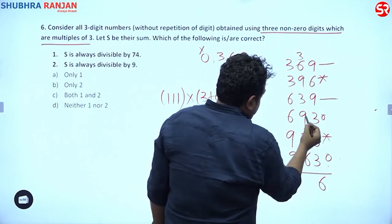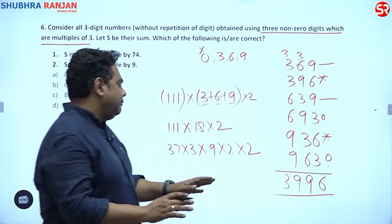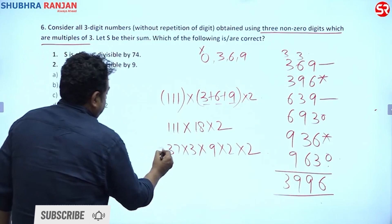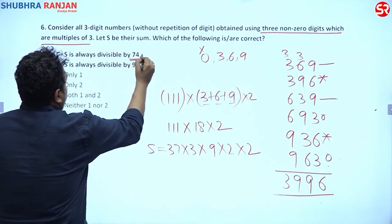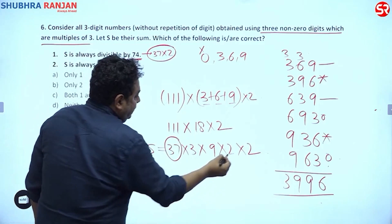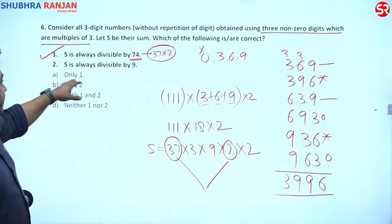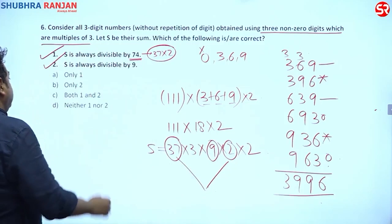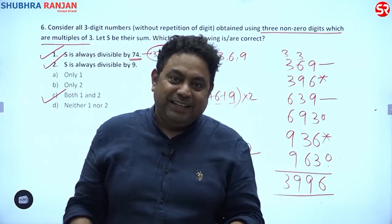So S = 3996. Checking divisibility: 74 = 37 × 2, and since S contains factors of both 37 and 2, S is divisible by 74. Also, S contains a factor of 9, so S is divisible by 9 as well. Both options 1 and 2 are correct.